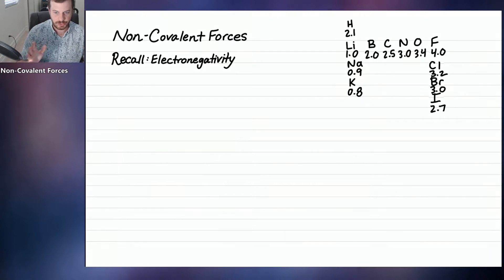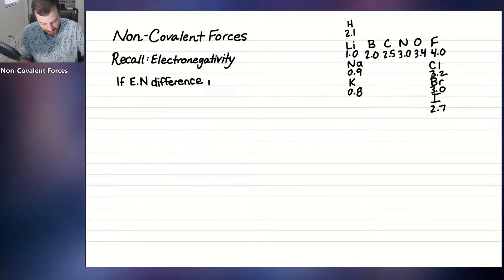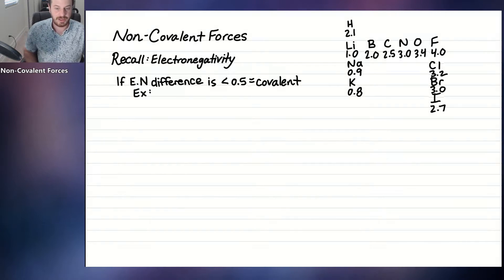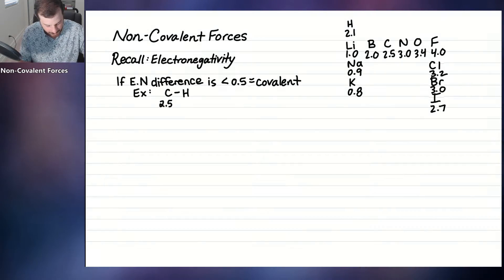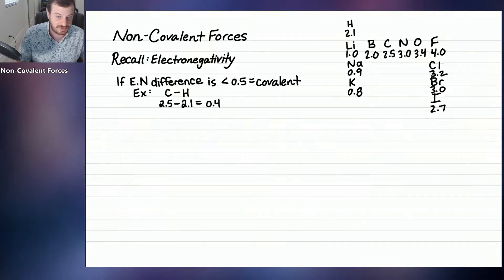If you have a bond between two atoms, there is an electronegativity difference you can calculate for that bond. If the electronegativity difference is less than 0.5, we call that a covalent bond. For example, the bond between carbon and hydrogen: carbon's electronegativity is approximately 2.5 minus hydrogen's 2.1, giving 0.4. So the bond between carbon and hydrogen is classified as a covalent bond.